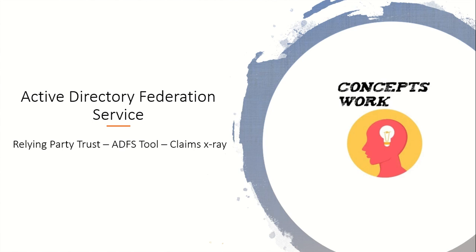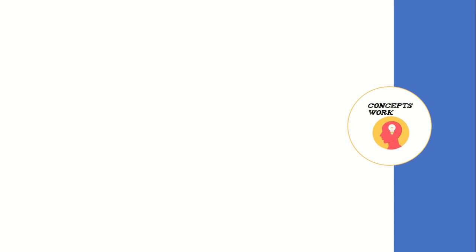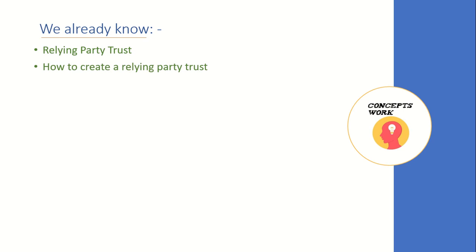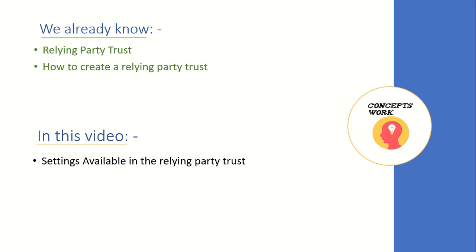If you watched the last video, we already know what a relying party trust is, how you can create one, and what the different settings available on a relying party trust are that can be customized. In this video I'm going to focus on the properties of your relying party trust, where you'll be able to update settings like custom claim rules, identifier values, and other things related to your relying party.